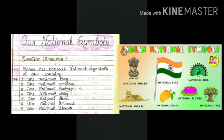To recap: the seven national symbols are national flag, national anthem, national emblem, national song, national bird, national animal, and national flower.